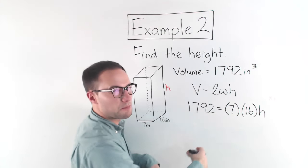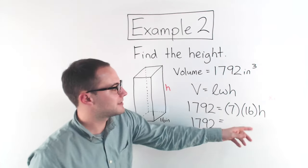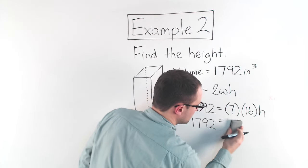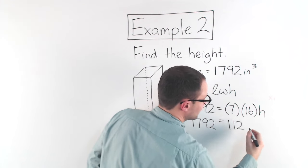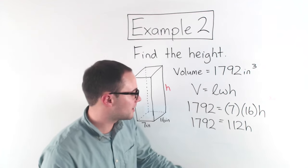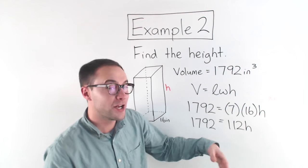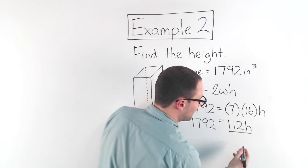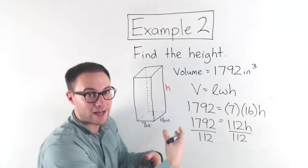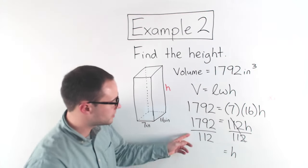First thing I'm going to do is I'm going to simplify it a little. So 1,792. 7 times 16, well that's 112. 112 times h. 112h. Hopefully you remember a little bit of algebra solving a one-step equation. This is 112 times h. So to undo that multiplication, I need to divide both sides by 112. To keep that equation balanced, that becomes 1 and goes away. So h is equal to, well let's see.